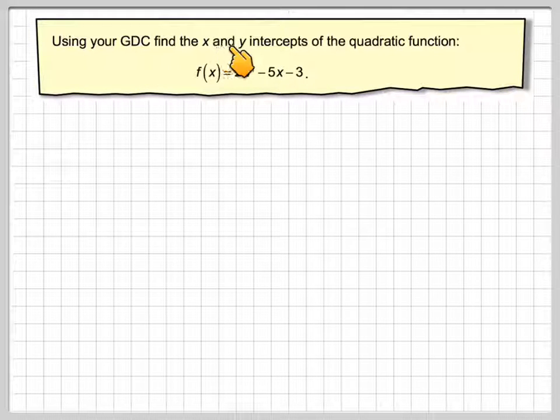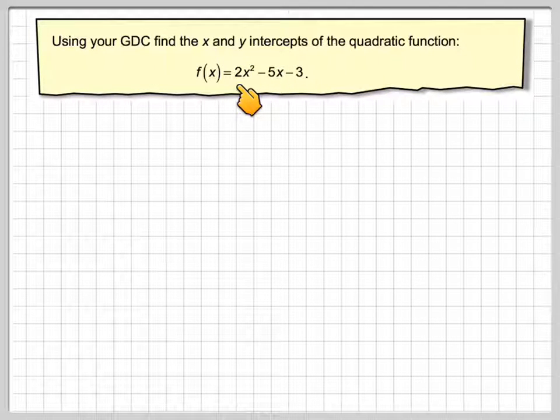Using your GDC, find the x and y intercepts of the quadratic function f(x) = 2x² - 5x - 3.